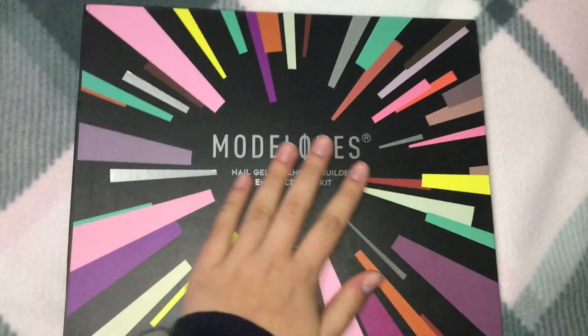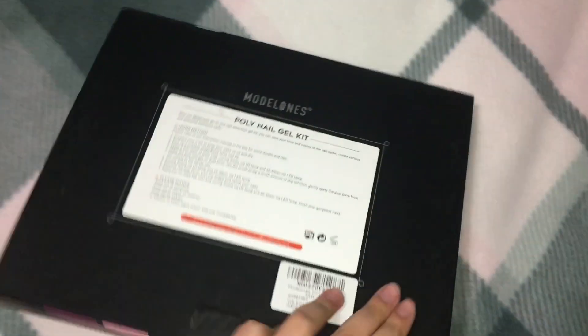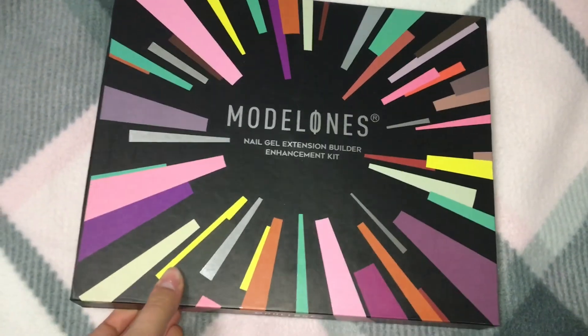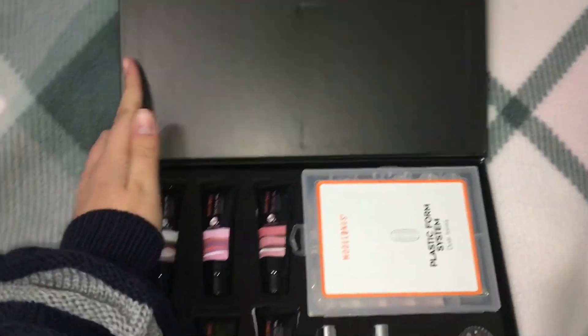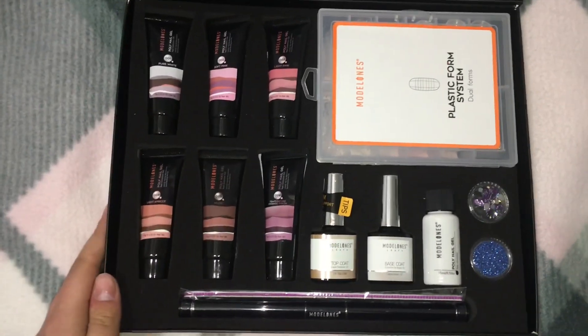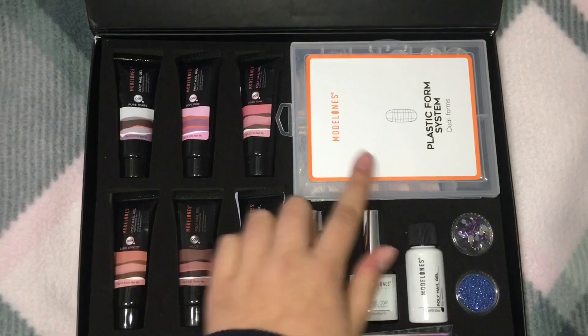So here is the kit that I received in the mail. It has beautiful packaging on the outside and there is more information on the back of what comes inside. And then once I opened it up, you can see all of the products. So there is a set of dual forms and these are used to sculpt the nail.